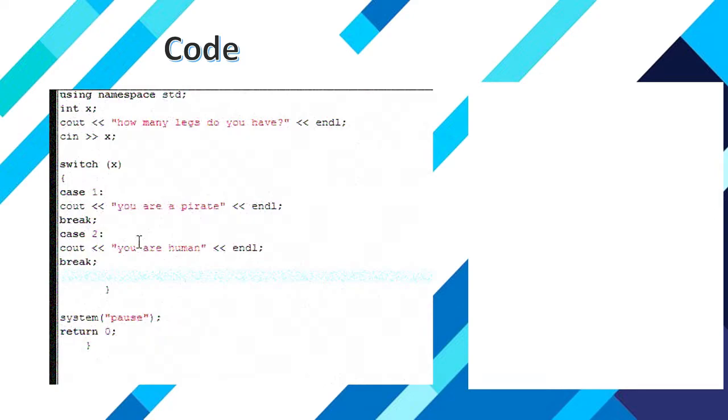Then switch x. There is case 1, case 2, and case 3. Case 1 says you are a pirate, case 2 says you are a human. Then the system pause. Let's see the output, then you will get a clear idea.